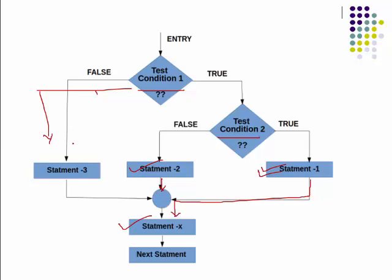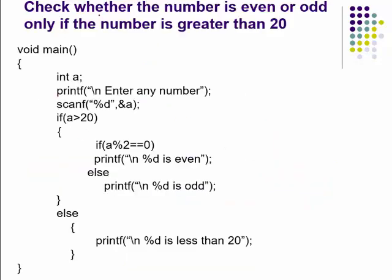Now let us understand nested if through an example: check whether the number is even or odd, but only if the number is greater than 20. We declare a variable and read the number. If the number is greater than 20, we check whether it is even or odd. If the number is not greater than 20, we simply display the message 'it is less than 20'.